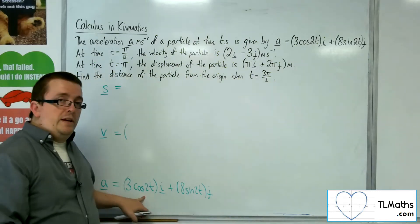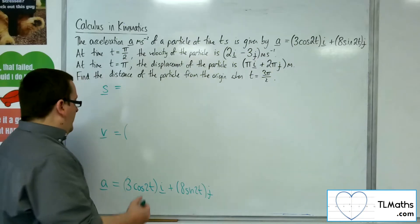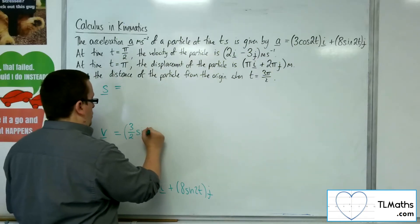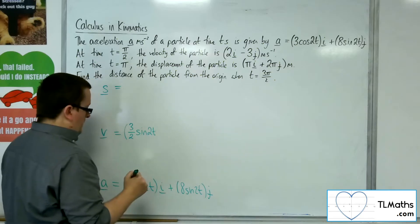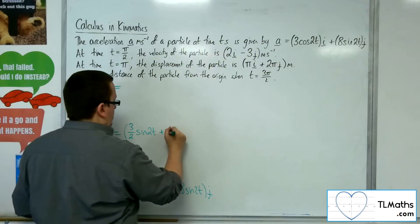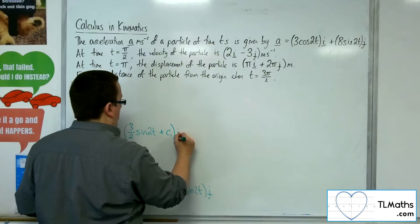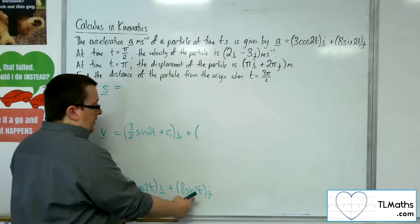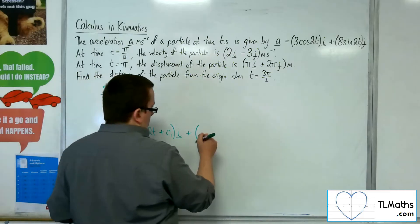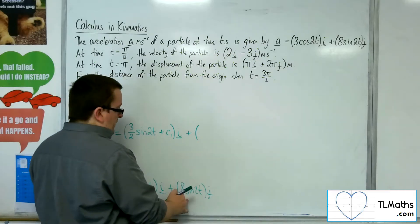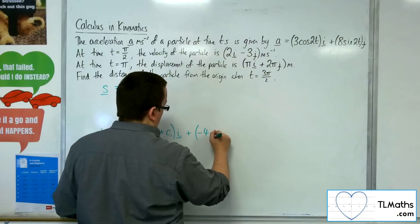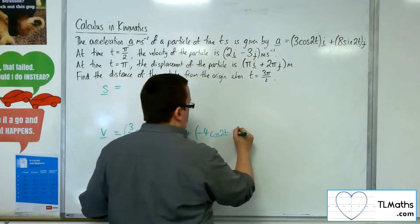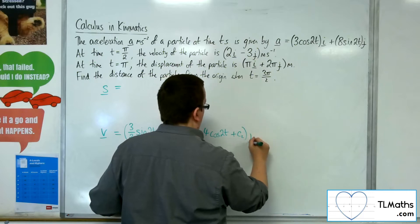Cosine integrates to sine, so we're going to get 3/2 sine 2t plus a constant of integration c1, for the i component. Then sine integrates to minus cosine, so we're going to halve the 8 and get minus 4 cosine 2t plus another constant of integration c2, for the j component.